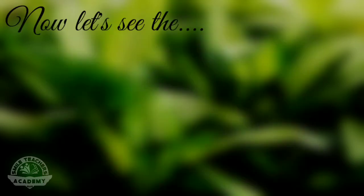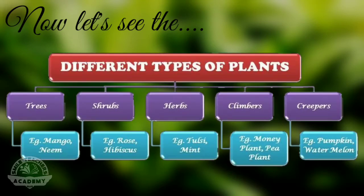Now let us see the different types of plants according to their size: trees, shrubs, herbs, climbers, creepers. Trees — example, mango, neem. Shrubs — example, rose, hibiscus. Herbs — example, tulsi, mint.